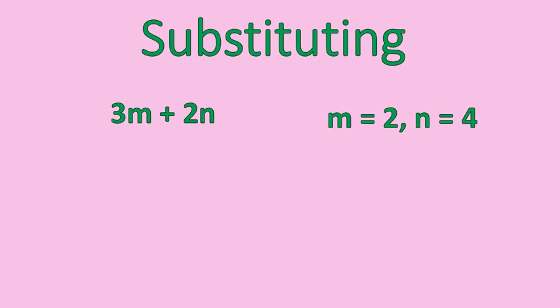Here's an example question. If we have this expression, 3m plus 2n, and we're told that m is equal to 2 and n is equal to 4, our first step would be to take those letters, m and n, and replace them with the numbers that were given. So m we're going to replace with the number 2, and n we're going to replace with the number 4.